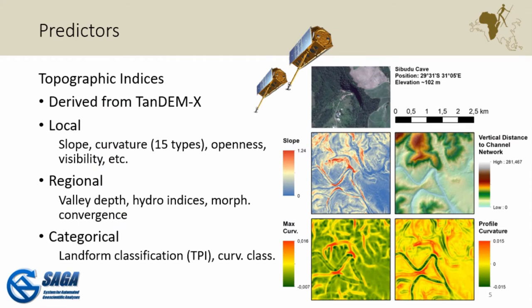We used a high-resolution radar elevation model at 30 meters — high resolution for radar though not for LiDAR — with a very large extent covering 200 kilometers along the coast. We calculated topographic indices: local ones like slope, curvature, openness, and visibility, and regional ones like valley depth, elevation, vertical distance to channel network, hydrological indices, and morphological indices. We also categorized the landscape using topographic position index and curvature classification to quantify it.